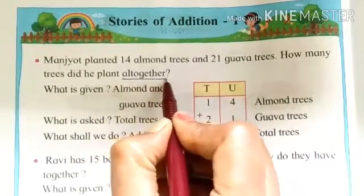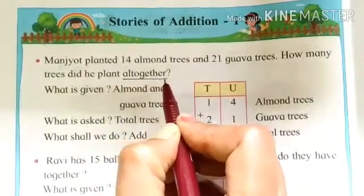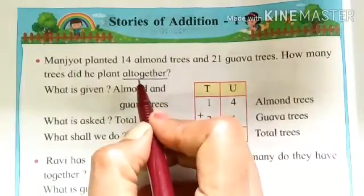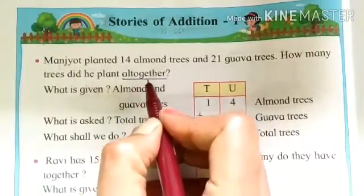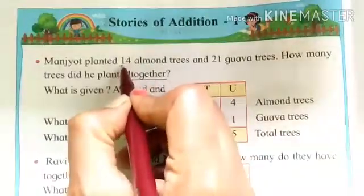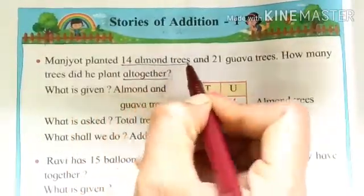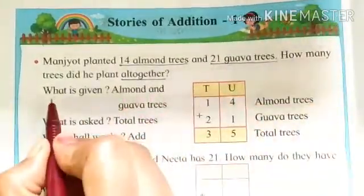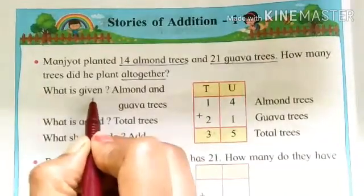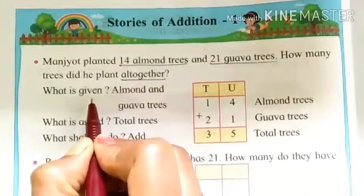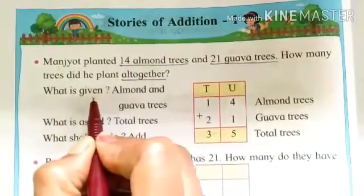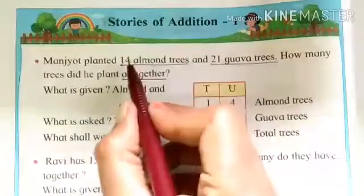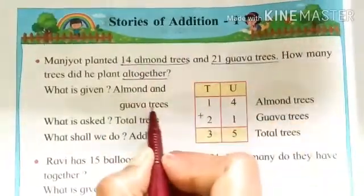All together means we can understand here we have to do addition. Now after this we have to see two numbers that we have to add. One is 14, that is almond trees, and 21 guava trees. So in this question, what is given? Given means jo already diya hua hai, given information. So what is given? That is almond and guava trees. See, almond and guava trees, it is given.